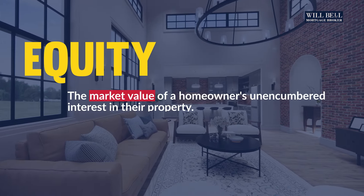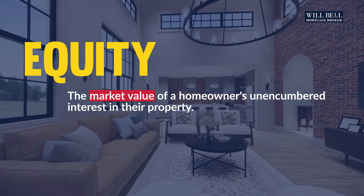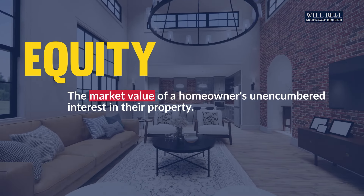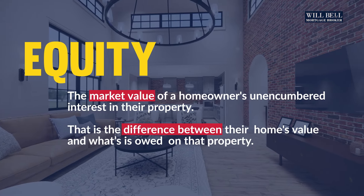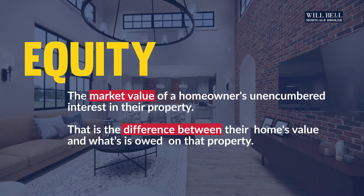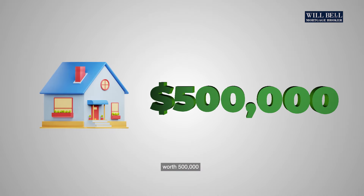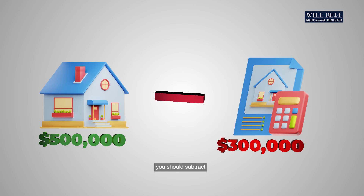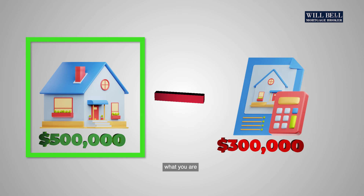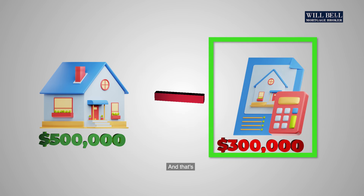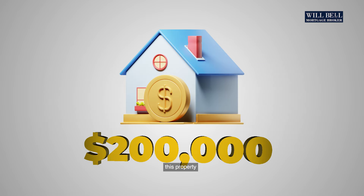Equity is the market value of a homeowner's unencumbered interest on their property — that is, the difference between their home's value and what is owed on that property. For example, if your house is worth $500,000 and you owe the bank $300,000, you subtract what you owe from the value, and the equity you have in this property is $200,000.